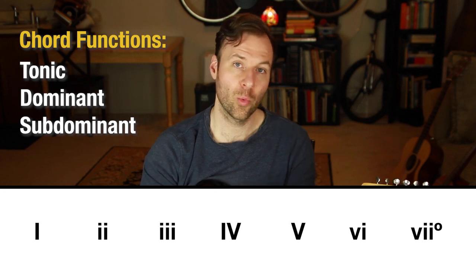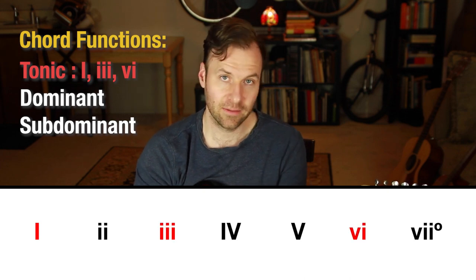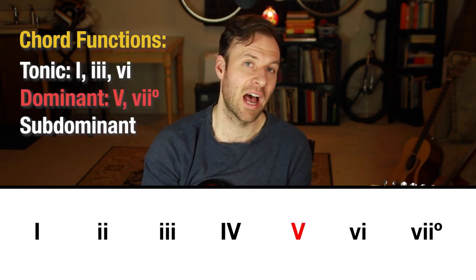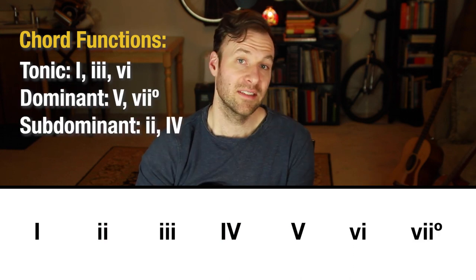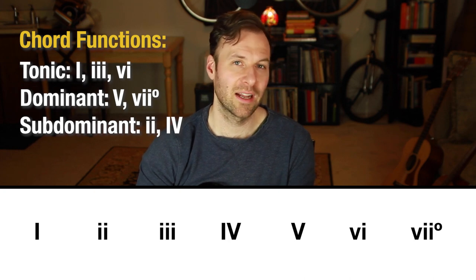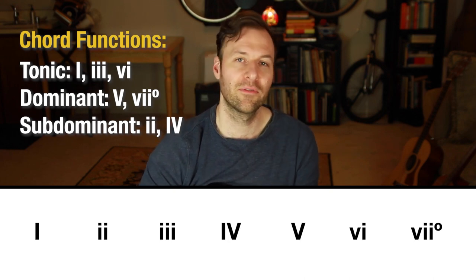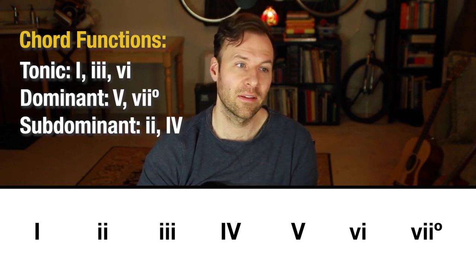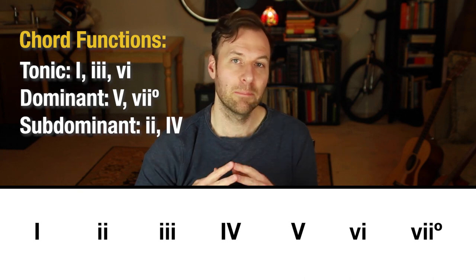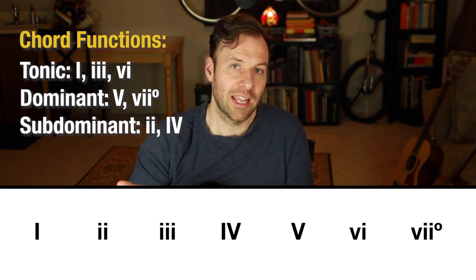In functional harmony each of the seven chords in a key can serve one of these three functions. The tonic functioning chords are one, three, and six. The dominant functioning chords are five and seven. The subdominant functioning chords are two and four. The six chord can also be used as a subdominant chord depending on how you use it. Of course, even in the official language of functional harmony there are ways to be flexible with these labels — you can break the rules, but this is the basic foundation.